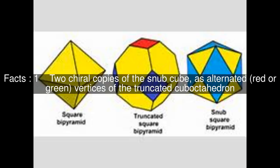Two chiral copies of the snub cube vertices of the truncated cuboctahedron. A snub cube can be constructed from a transformed rhombicuboctahedron by rotating the six blue square faces until the twelve white squares become pairs of equilateral triangles. The term originates from Kepler's names of two Archimedean solids, for the snub cube and snub dodecahedron.